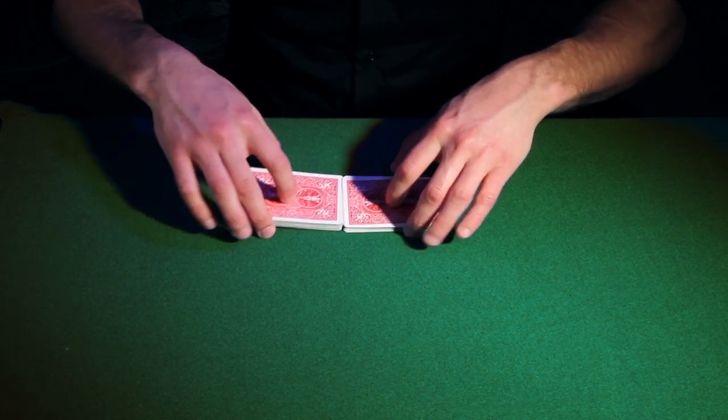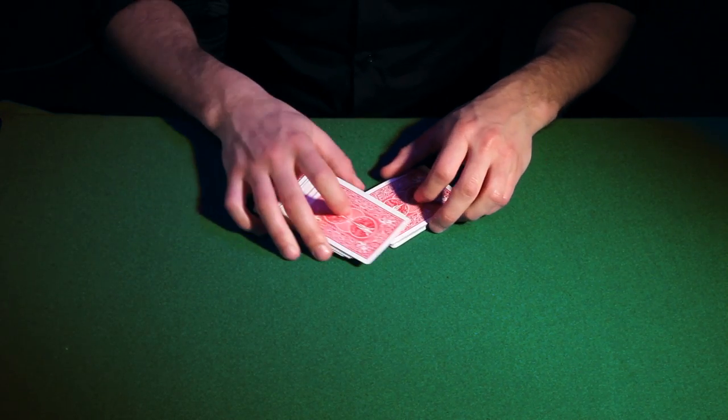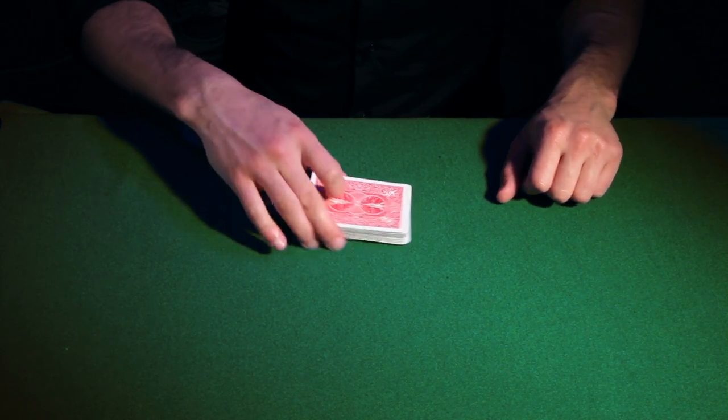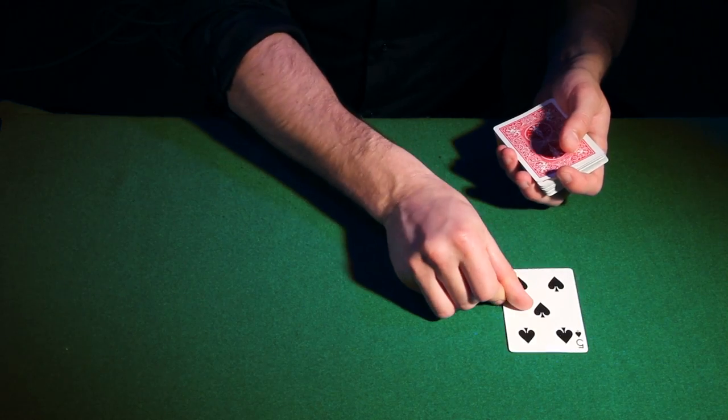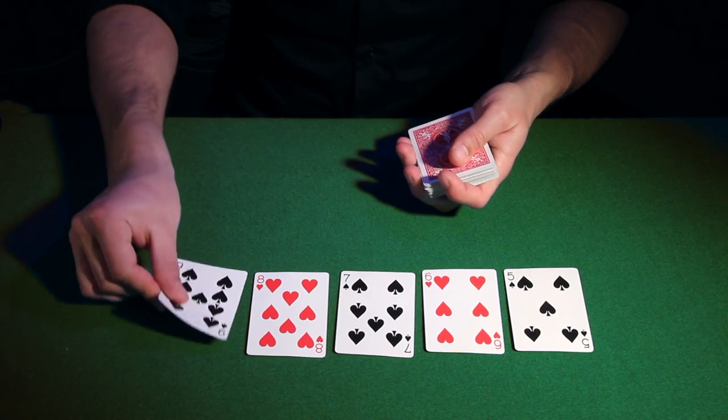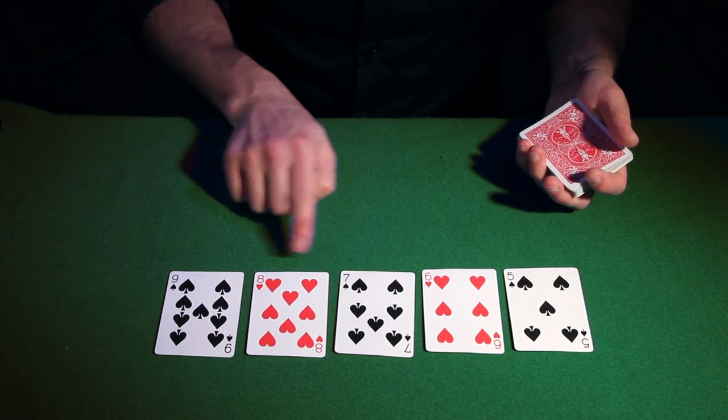This time, five cards will be needed in order to make a straight. Five consecutive cards. For example, five to nine. Five, six, seven, eight, and nine. The suit is not important yet.